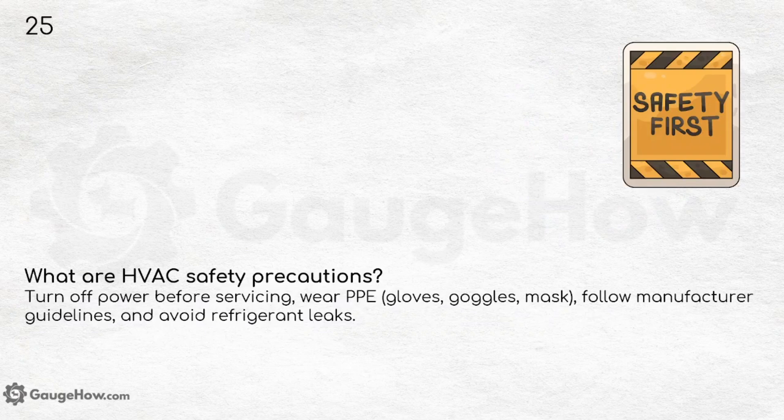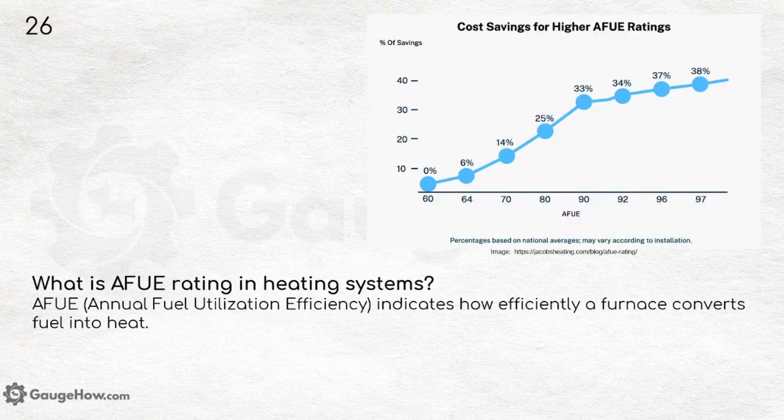If you are going for an interview, safety precautions are a very important question. Turn off power before servicing, wear PPE — gloves, goggles or mask — follow manufacturer guidelines and avoid refrigerant leaks. What is the AFUE rating in heating systems? AFUE — Annual Fuel Utilization Efficiency — indicates how efficiently a furnace converts fuel into heat.